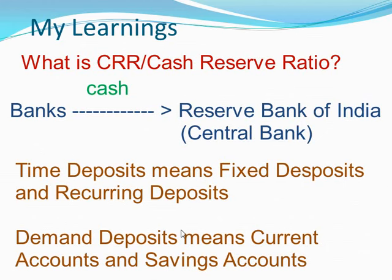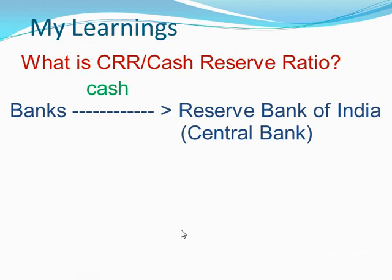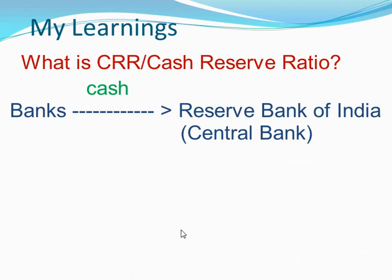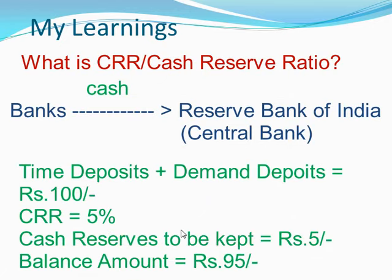The Cash Reserve Ratio or CRR can vary between 3% and 5% of the total time and demand deposits of the bank. Suppose a bank has Rs.100 as total time and demand deposits and CRR is 5%, then that bank has to keep Rs.5 with the central bank as a cash reserve. The amount kept by the bank as a cash reserve with the central bank cannot be used for the purpose of lending.